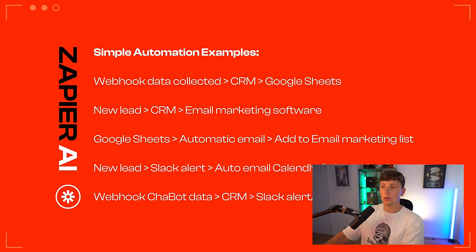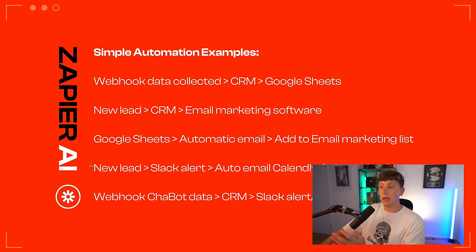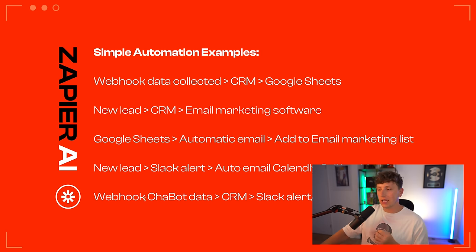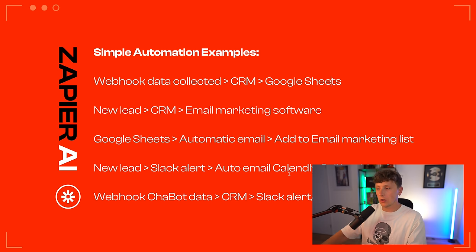Here are some other simple automation examples. A new lead into a CRM and that lead gets pushed into email marketing software. Or a form filled in a Google Sheet sends an automatic email to whatever email was left there, and that email is added to your email marketing list. Or a new lead triggers a Slack notification and auto-emails a Calendly call booking form. For those building chatbots, you can add a webhook into a chatbot like Botpress, collect that data, send it to your CRM, and then send a Slack alert that there is a new lead.